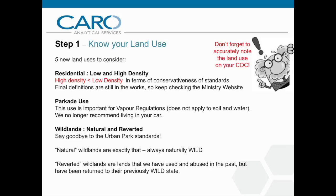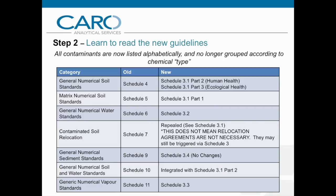Once you have identified your land use, step two to being successful with the new guidelines is understanding how to read them. The table shown here indicates how the former CSR schedules have been reorganized and where you can expect to find the contaminants you know and love under the new scheduling system. Schedule 3 will be the place to look once the new regulations come into effect. It is worth noting that all contaminants are now listed alphabetically and are no longer grouped into categories based on their structure and properties. It may look messy at first, so we do recommend implementing an internal method to understanding these compounds and how they relate to one another. Once all the final limits are released and the new methods are complete, we hope to be able to provide you with a starting point for this task.